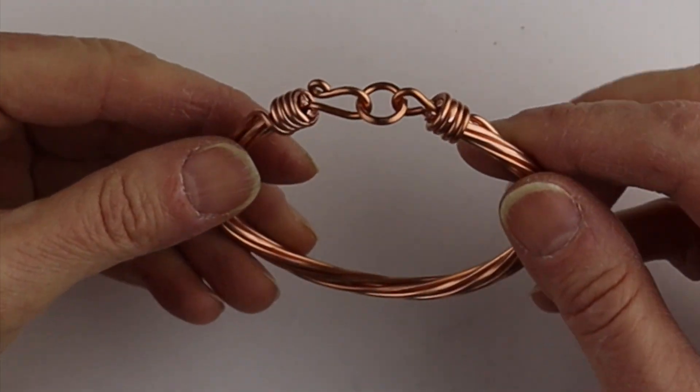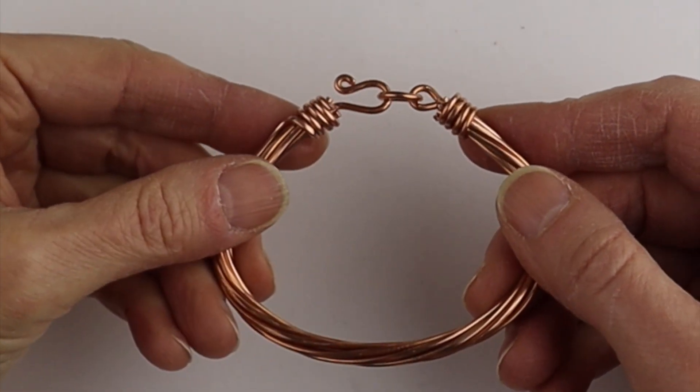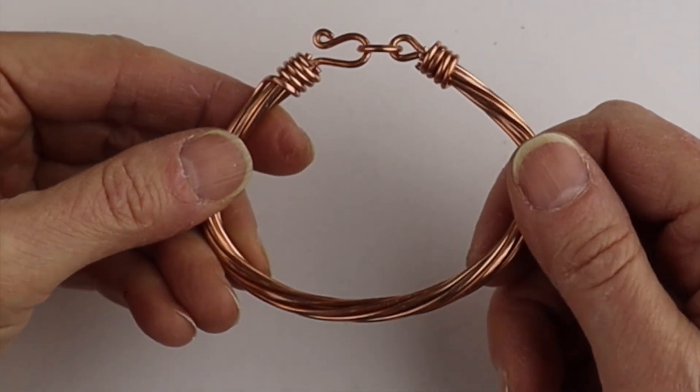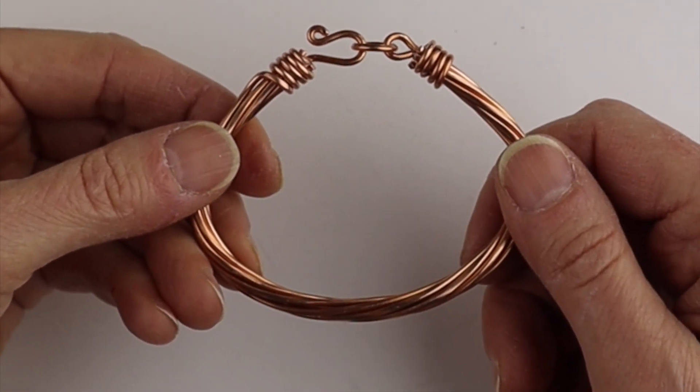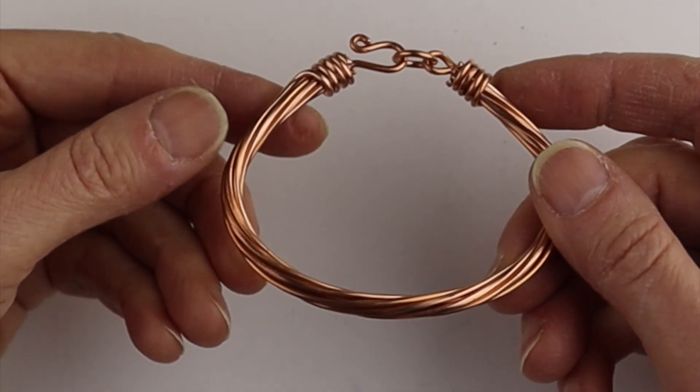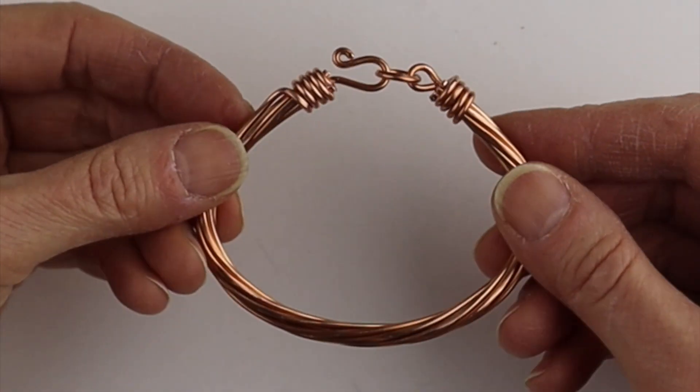It's very heavy duty. If you don't have this seven strand 18 gauge copper or if you find it too heavy or too bulky, you can twist together seven strands of 20 gauge wire and make a more delicate bracelet with the same technique.